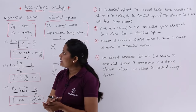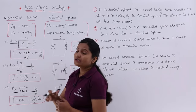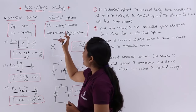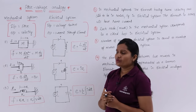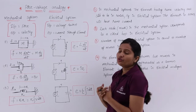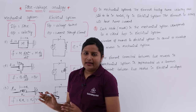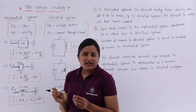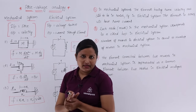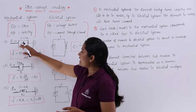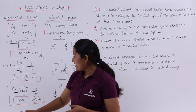For a mechanical system, the input is always considered as force and the output is in terms of velocity. For an electrical system, the input is a voltage source and the output is current through the element. There are three basic elements in a mechanical translational system: mass, dashpot, and a spring.